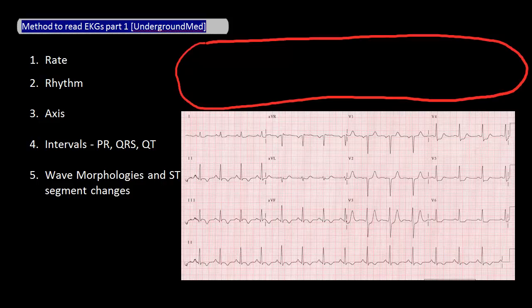My method is to evaluate these things in this order: rate, rhythm, axis, intervals, and morphologies and ST segment changes. Let's go through what this means one item at a time.